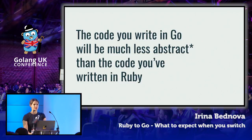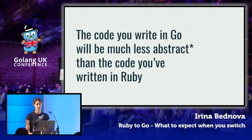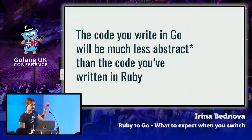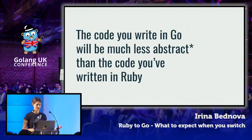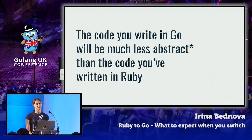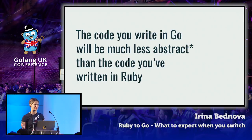The conclusion from this is that the code you write in Go will be much less abstract than the code you write in Ruby. I put an asterisk next to 'abstract' because it's a bit abstract to talk about abstract. Let's run another experiment to define what I mean by less abstract.